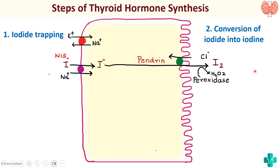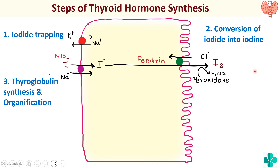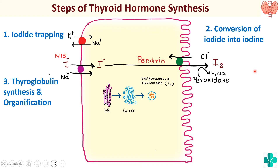Our next step is thyroglobulin synthesis as well as organification. Thyroglobulin is synthesized within the follicular cell from the endoplasmic reticulum, packaged via the Golgi apparatus, and this thyroglobulin precursor is then transported outside the follicular cell. The combination of iodine to thyroglobulin is called organification. This is the second step: thyroglobulin synthesis and organification.